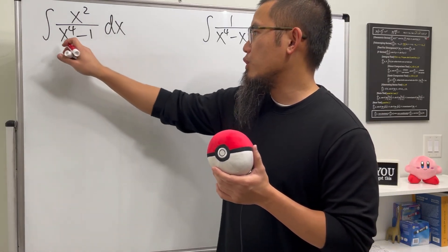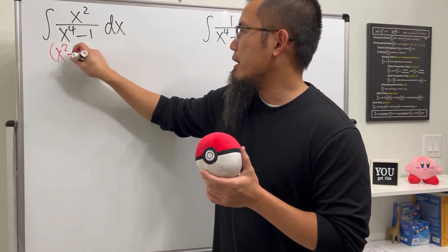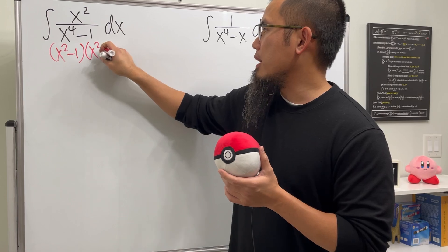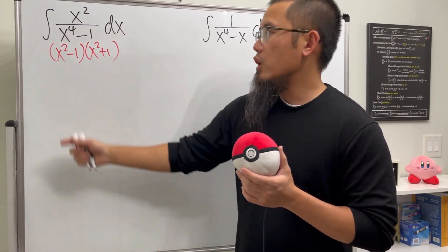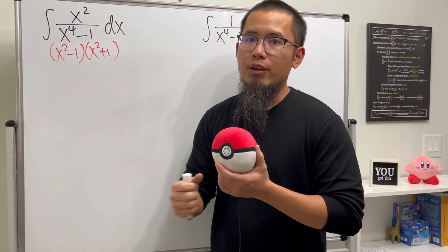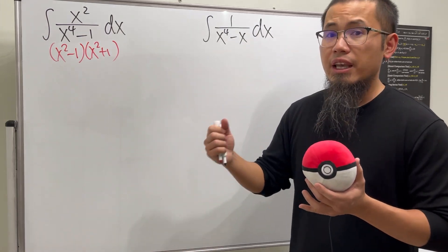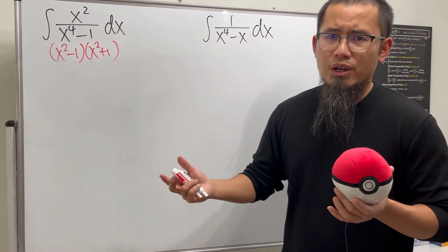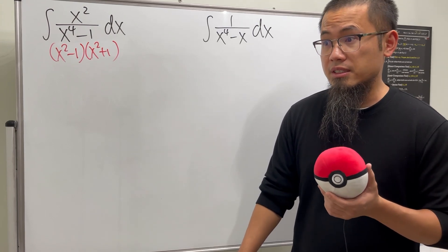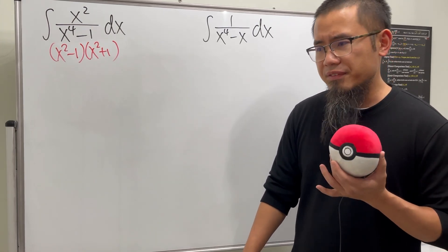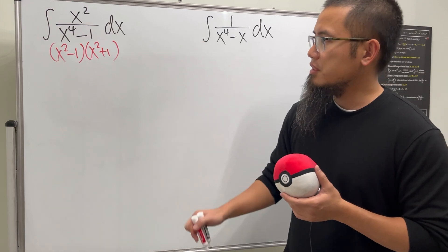Usually we just go ahead and factor this, and we get (x² - 1)(x² + 1). Traditionally, we will factor this again, and then we have to break down into three little fractions, and we actually get a, b, c, and d, and we have to set up system equations and things like that. Don't do that. Life doesn't have to be that hard.